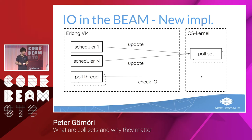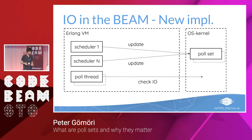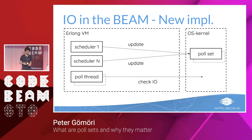Now let's see the new implementation and what's different. IO checking now happens in a dedicated polling thread — not in the schedulers. That polling thread only does this, so it's not interleaved with executing Erlang code and can react to events immediately. There can actually be multiple poll threads. If possible, the Erlang VM will update the poll set within the kernel, which supports lockless updates — meaning the poll set lock is removed, improving scalability a lot.